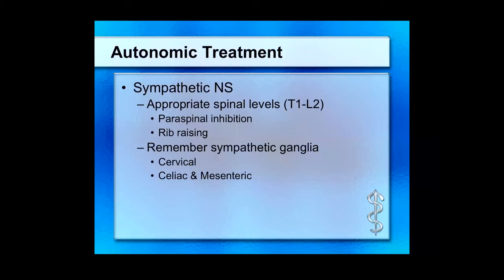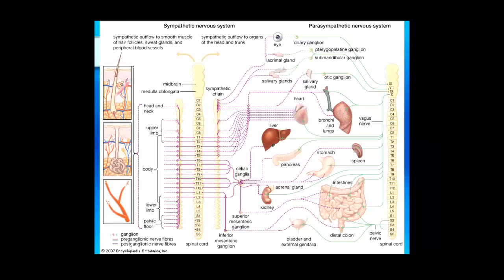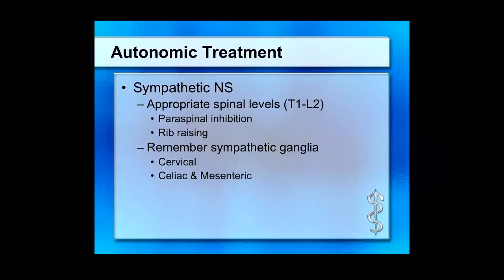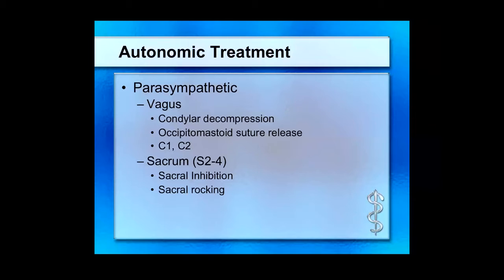Brief reminder: sympathetic nervous system, T1 through L2. These things are easy to treat. If you're conducting an H&P — examining the patient while talking to them at the bedside — you can have your hand underneath the rib doing rib raising, or do paraspinal inhibition. It's a very easy thing to add to what you're already doing. For parasympathetics, there are really only two major players: the vagus nerve and the sacrum. Don't forget that the vagus nerve has effects from C1–C2, so the neck is a good place to look. Inhibition is the single simplest thing to incorporate as part of your H&P.